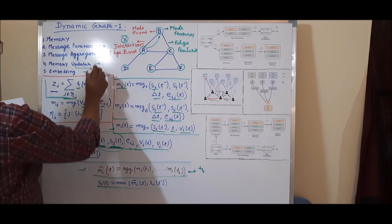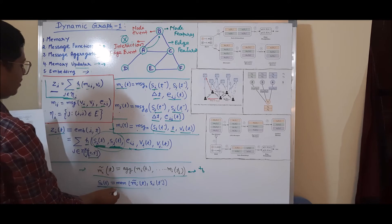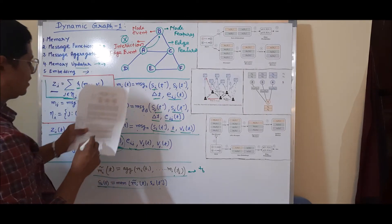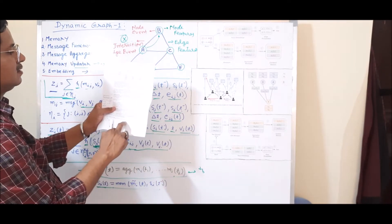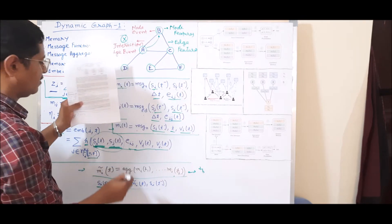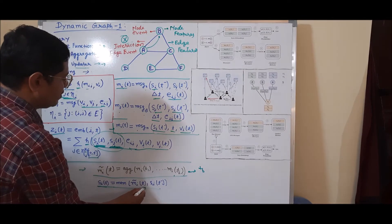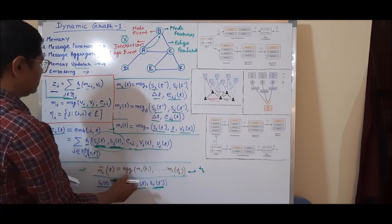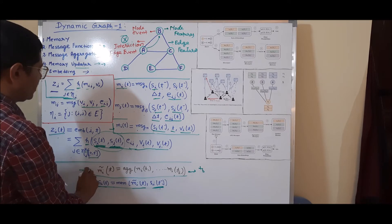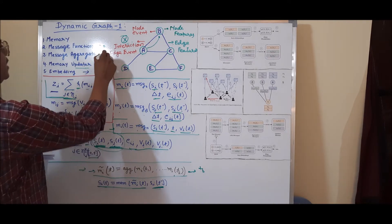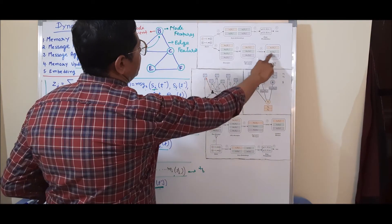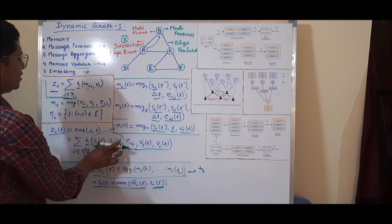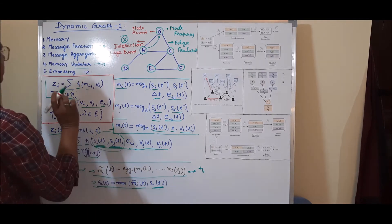The memory updater function updates the memory based on the new message outcomes coming from the message aggregator. According to the equation given in the paper, the memory updater takes the aggregated messages and updates the memory accordingly. The memory updater then contains the latest information that the system uses to compute the node embedding.